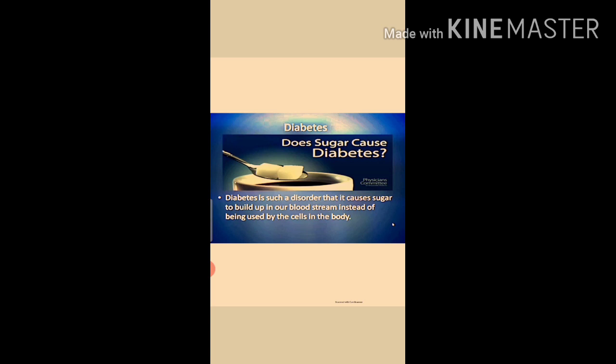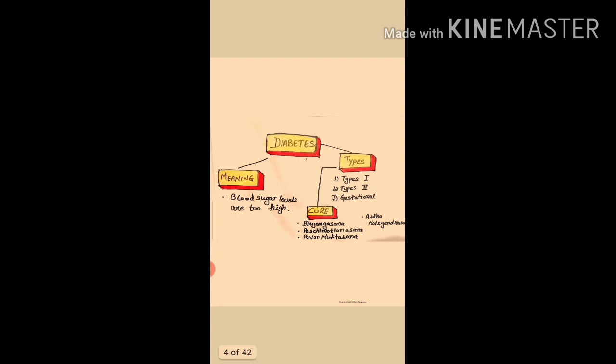Diabetes occurs when the blood sugar levels increase — meaning excess glucose is present in the blood beyond normal levels. With a urine test we can detect the disease. When there is too much sugar in the blood, we say there is high blood glucose, which means diabetes. Diabetes can lead to a build-up of sugar in the blood, increasing the risk of dangerous complications including strokes and heart diseases.